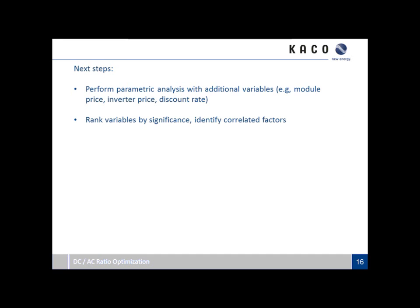For next steps, I'd like to take a more rigorous analysis, add more variables into the parametric analysis, and really look at how they're interacting and which ones are most significant. I'd use that to create future scenarios to look at what products will fit consumer needs based on how module prices are going to change — say, 50 cents per watt to a dollar per watt — or what is going to happen with discount rates. The question is: where is that peak net present value going to occur as a function of DC to AC ratio, and how can we design products to meet those customer needs? With that, I'll leave it open to any questions.